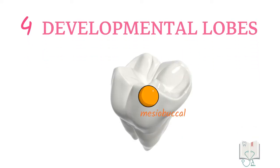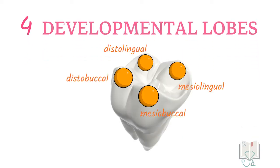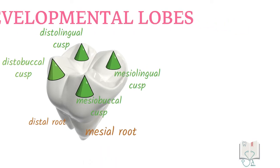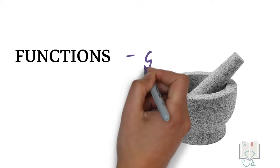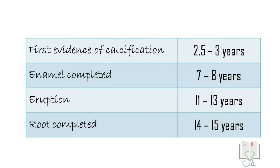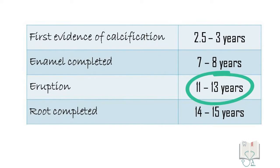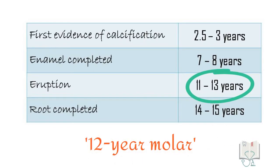It develops from four developmental lobes — mesiobuccal, distobuccal, mesiolingual, and distolingual — which give rise to four cusps respectively. It has two roots: mesial root and distal root. Its function is grinding. In chronology, the tooth erupts at the age of 11 to 13 years, due to which it is sometimes also called the 12-year molar.